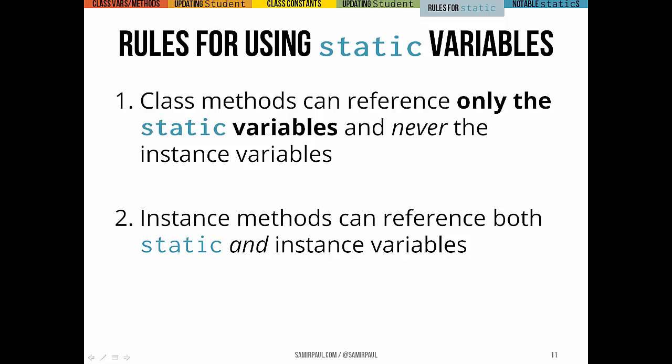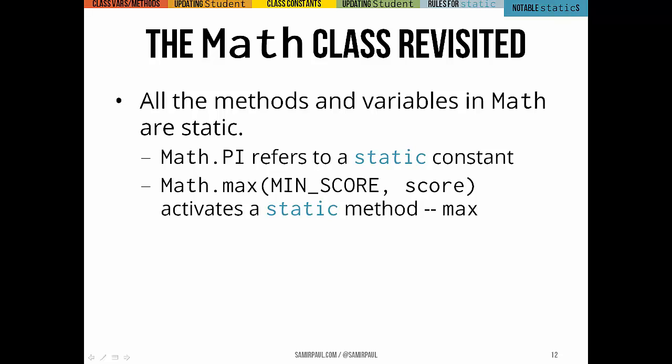There are two simple rules to remember when using static variables. First, class methods can reference only static variables and never instance variables — this makes sense because a static method doesn't rely on any particular instance of the class existing. If there's no instance, it doesn't make sense for a static method to refer to an instance that might not exist. Second, instance methods can refer to both static and instance variables. The key idea is that static variables and methods exist as soon as the code is compiled and don't rely on any instances being created. If you think back, all the methods and variables in the Math class — Math.max, Math.min, Math.PI — are all static, which is why we can use them that way.